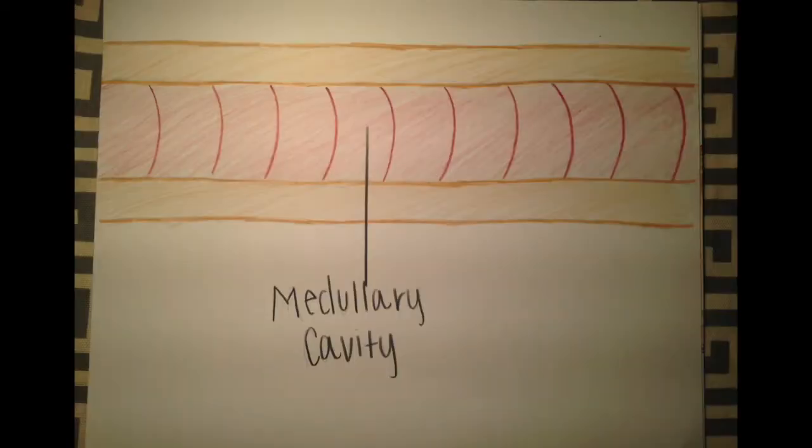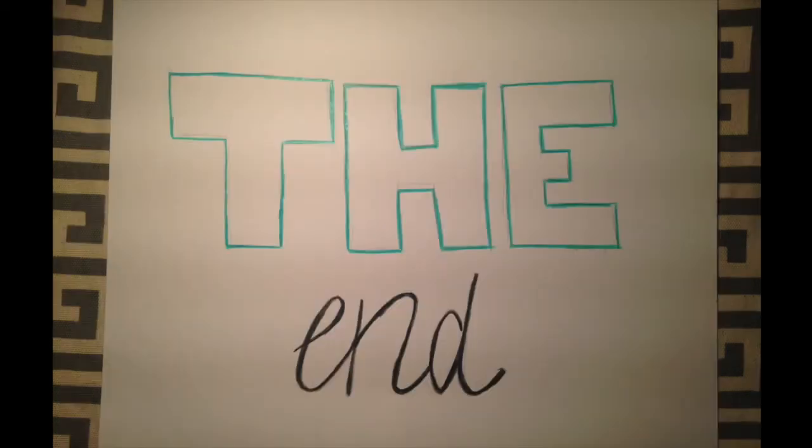To review, bones created by intramembranous ossification are classified as flat bones, composed of a layer of spongy bone surrounded by a layer of compact bone. However, if a medullary cavity is present, this allows red or yellow marrow to be stored in the bone. And that about sums it up. Thank you for watching this presentation on intramembranous ossification.